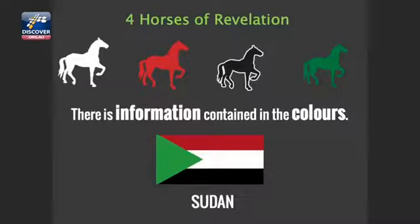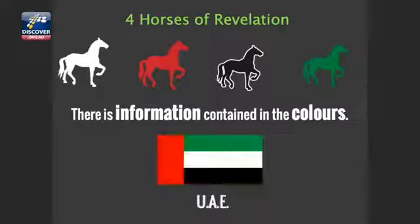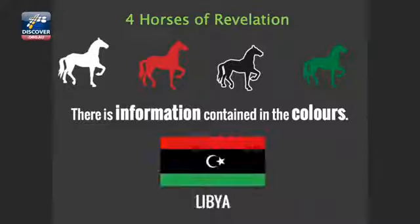But flags tell you something. Colors tell you something. What colors do you see on the national flag of Sudan? This is another player in World War III according to Ezekiel 38-39. Do you see white, red, black, and green? Let's go to Kuwait. What do you see? Let's go to the United Arab Emirates. White, red, black, and green. Let's just go to Libya.